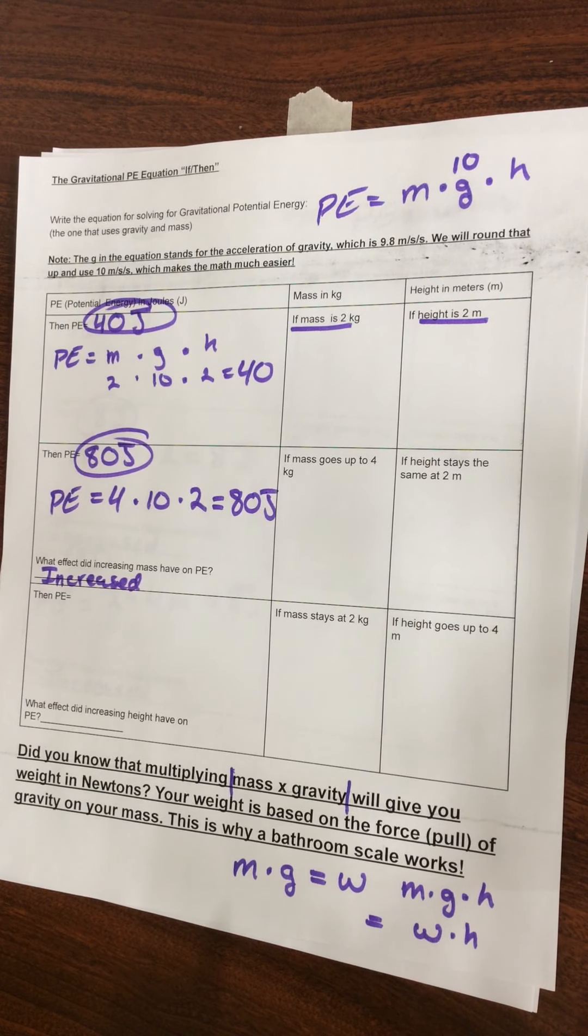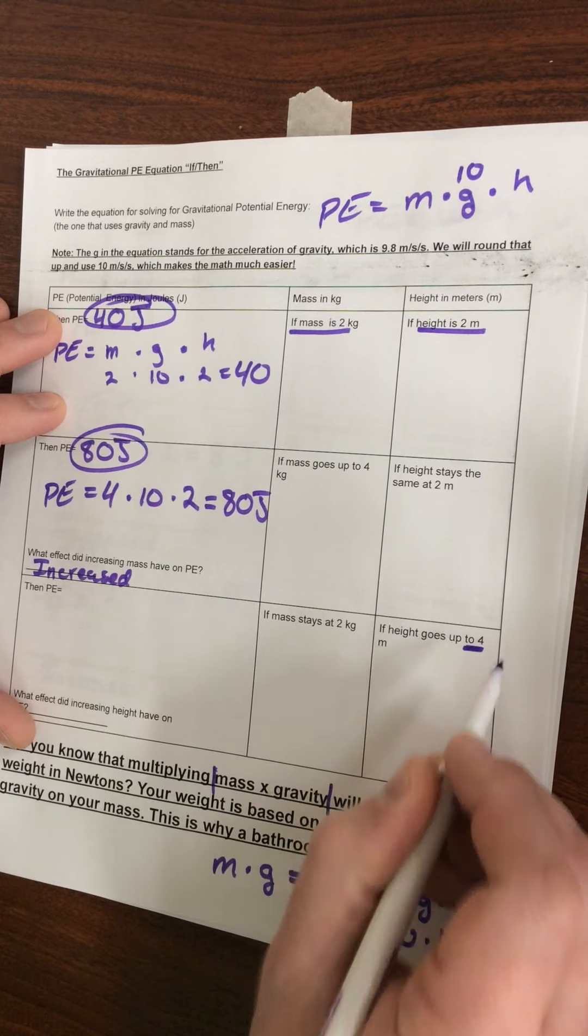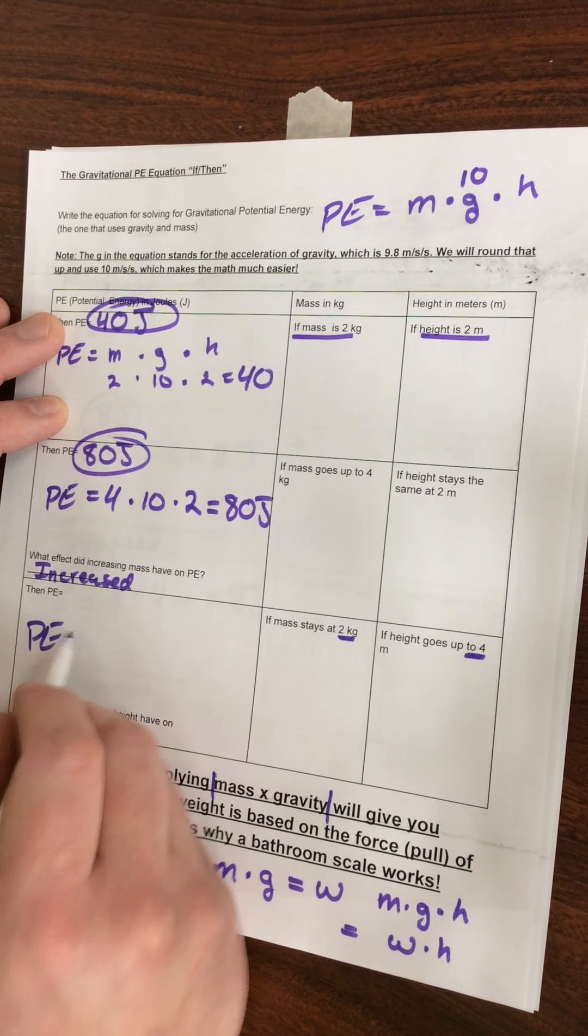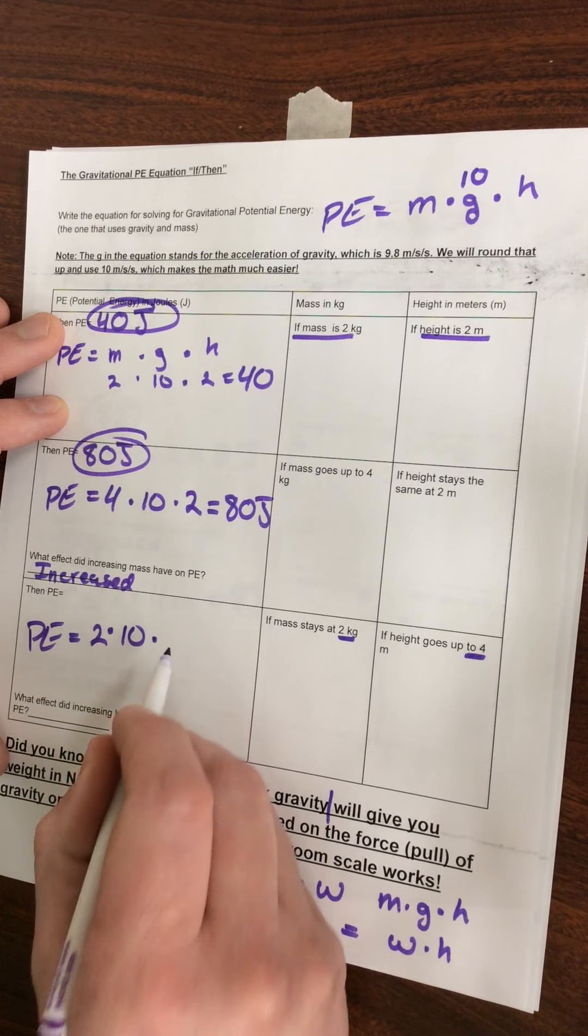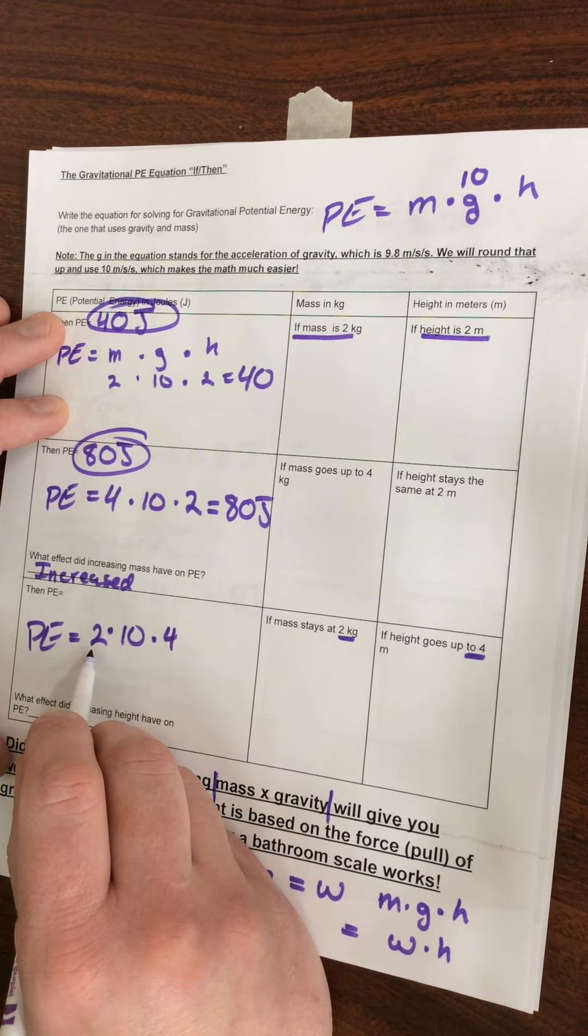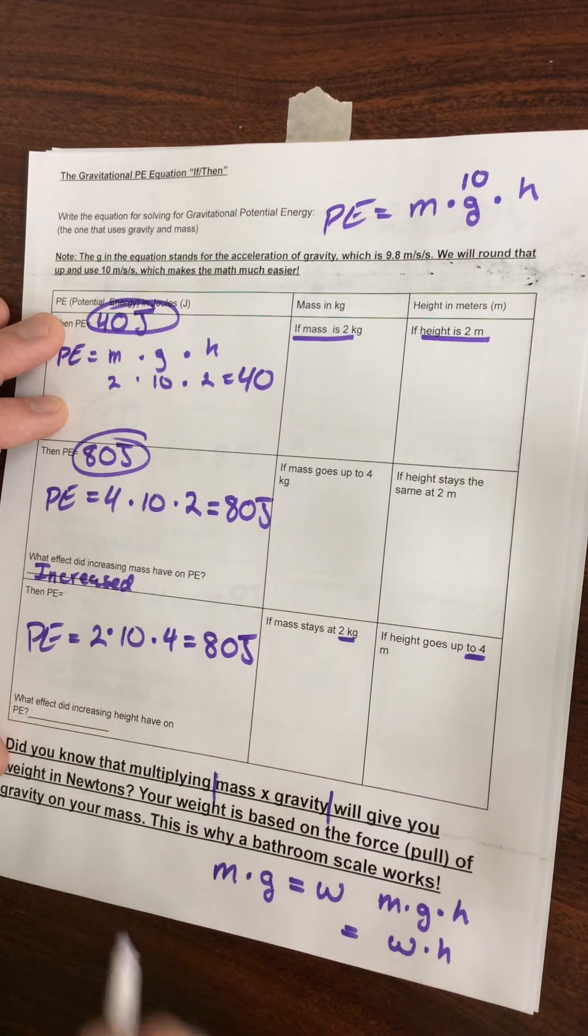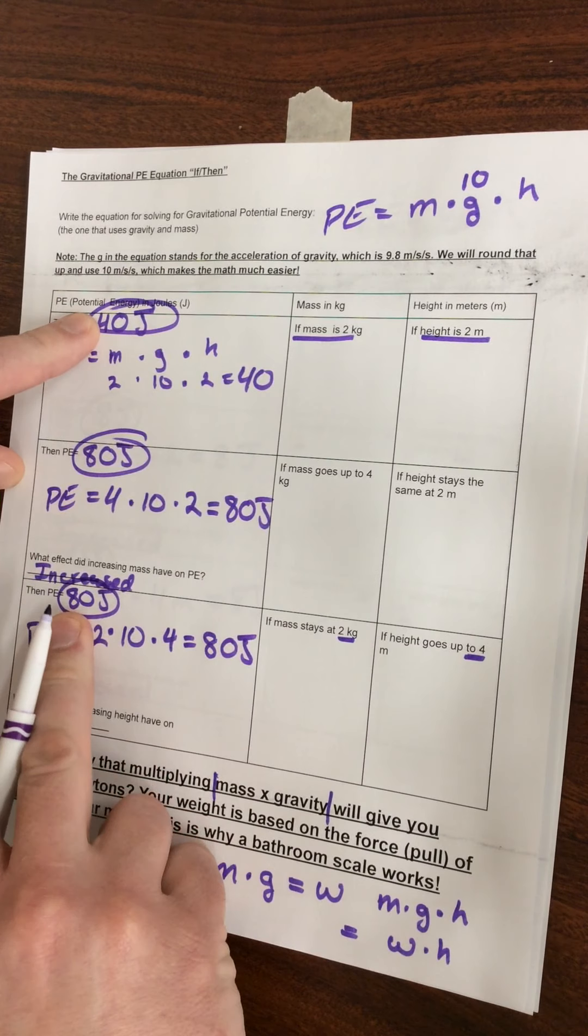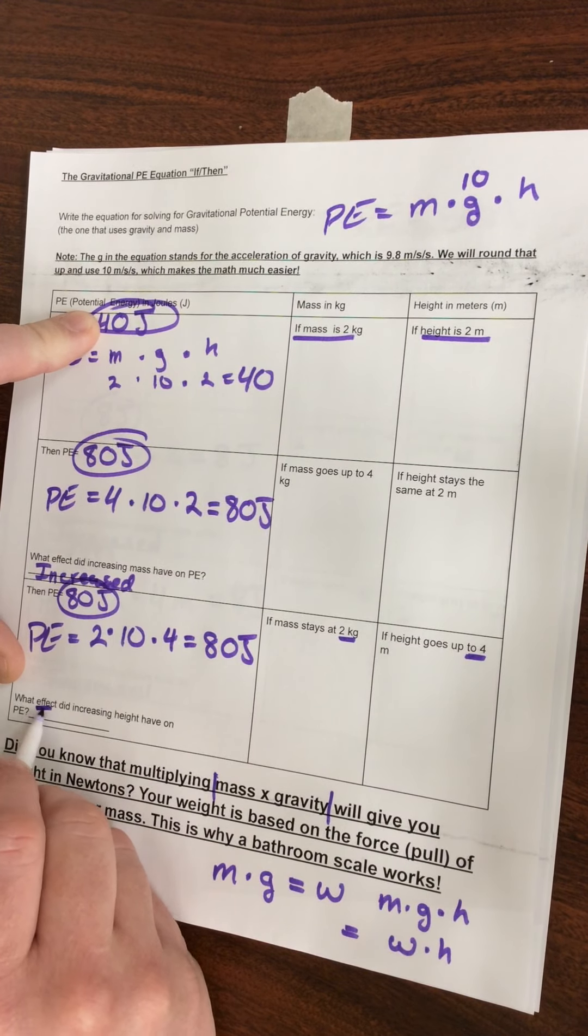Now we're going to increase the height to 4 meters and leave the mass at 2 kilograms. Our PE now equals 2 times 10 times 4. So 2 times 10 is 20, times 4 gives us a total of 80 joules. So our PE here is 80 joules, which is an increase from 40 joules. What effect did increasing weight have on potential energy? Well, it increased.